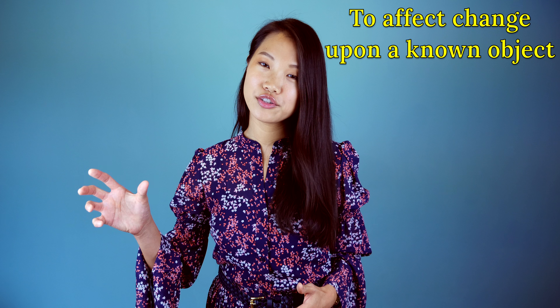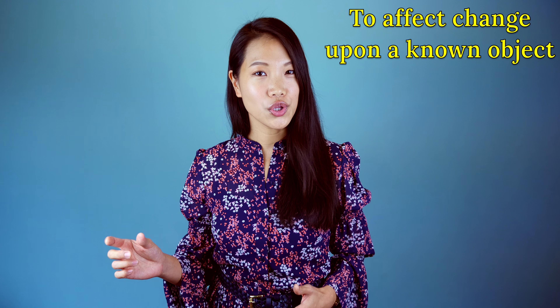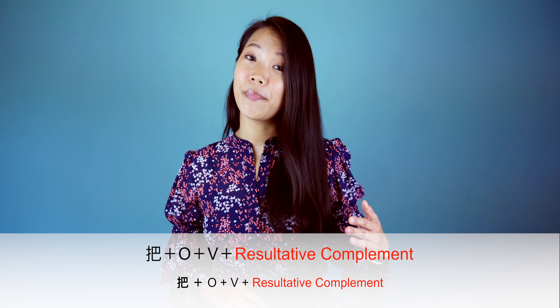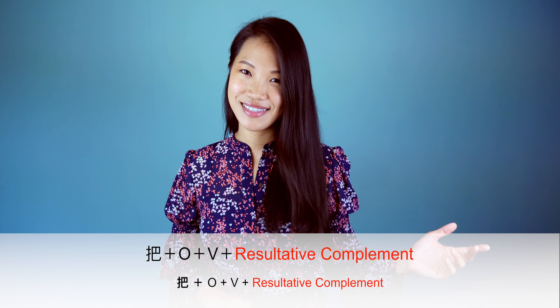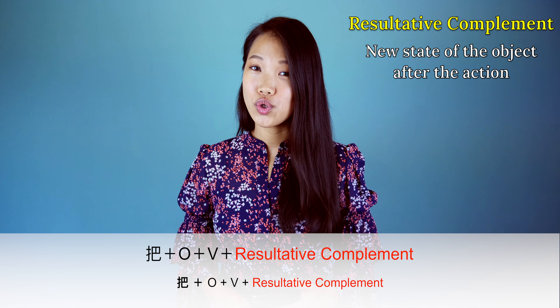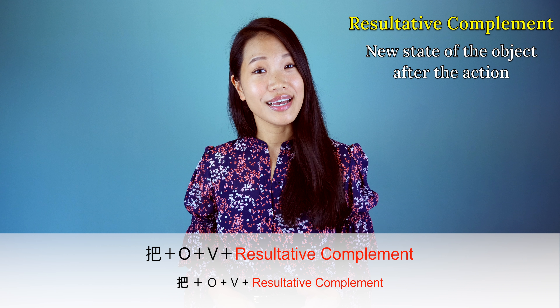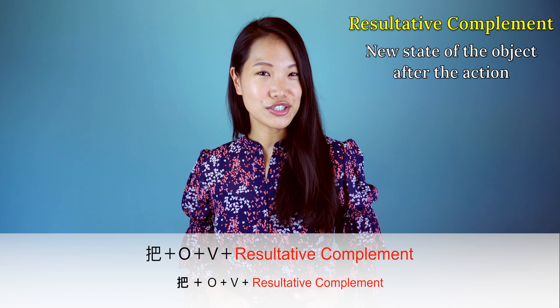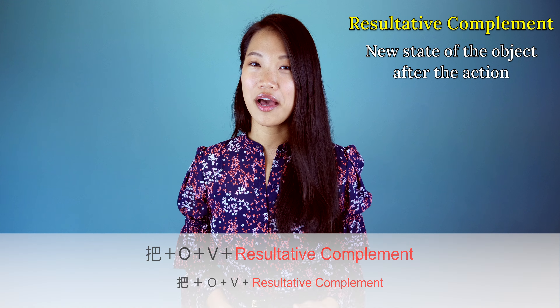In the second imperative sentence structure, the speaker asks the listener to affect change upon a known object. Thus we see: 把 + object + verb + resultative complement. The resultative complement describes the new state of the object after the action — the listener is now changing the state of the object.